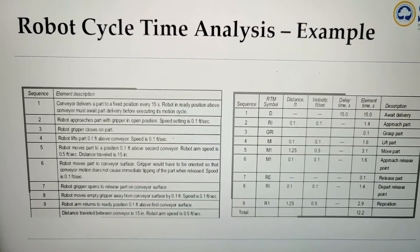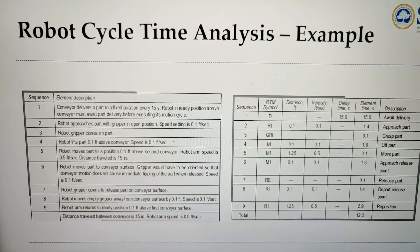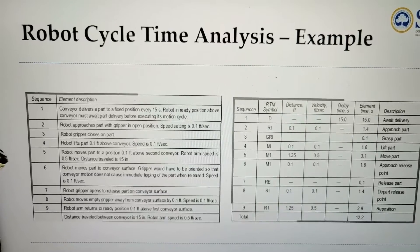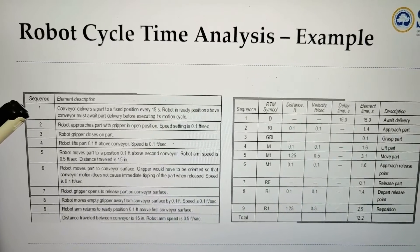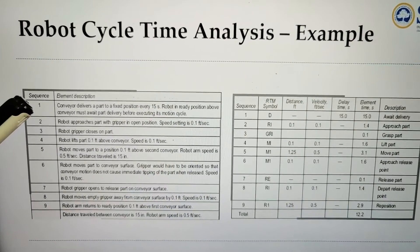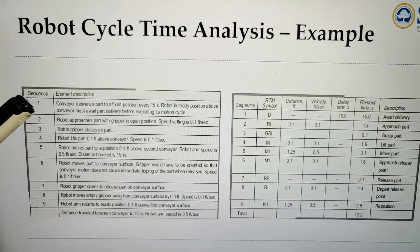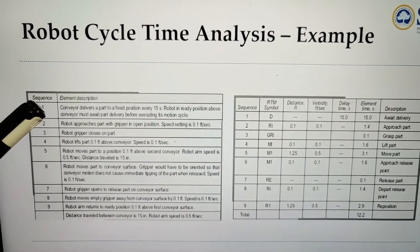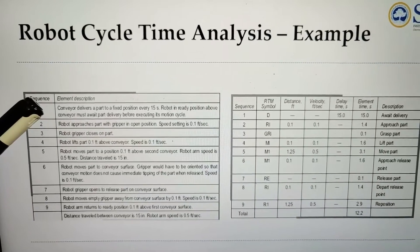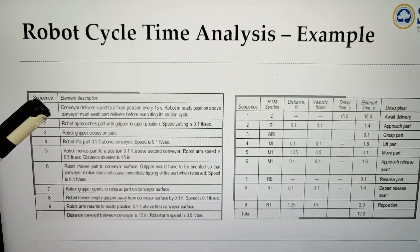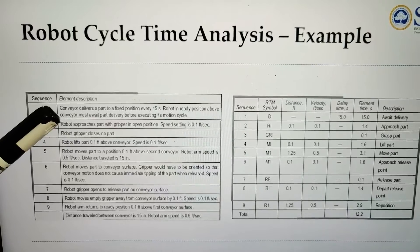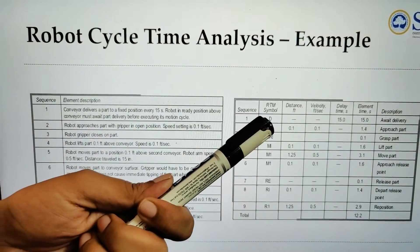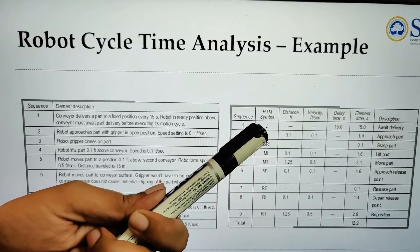Based on the sequence, we write the work cycle elements and their symbols. The first step: the conveyor delivers a part to a fixed position every 15 seconds. The robot in ready position above the conveyor must await part delivery before executing its motion cycle, so the symbol used is D, which is the time delay or wait time.